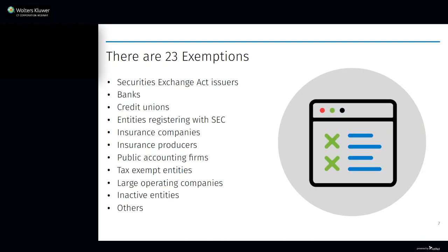The final rule sets forth 23 exemptions. If your corporation, LLC, or other entity qualifies for an exemption, it is not a reporting company and does not have to file a report. The exemptions are mainly for larger, more heavily regulated companies and include, among others: issuers of securities registered under Section 12 of the Securities Exchange Act or required to file reports under Section 15; banks; credit unions; securities brokers or dealers; entities registered with the SEC or under the Commodity Exchange Act; investment companies and advisors; insurance companies; state-licensed insurance producers; public accounting firms; pooled investment vehicles; tax-exempt entities; large operating companies; subsidiaries of certain exempt entities; and inactive entities.